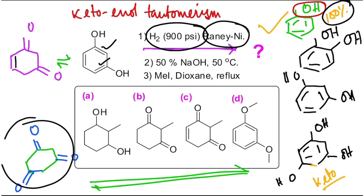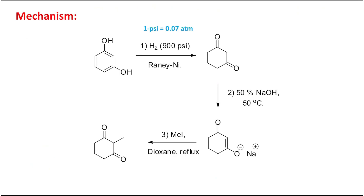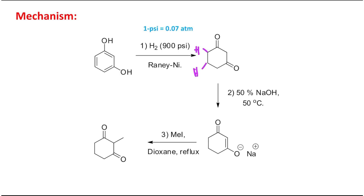At 900 psi in presence of Raney nickel - which is a highly porous, hydrogen-containing nickel catalyst - this will reduce the double bond. The first step is the reduction: through keto tautomerization, only one double bond remains, and that double bond is reduced. This produces the hydrogenated product with the hydrogens added. Note that 900 psi is not a small pressure; one psi equals 0.07 atmospheres, and Raney nickel is the catalyst for hydrogenation.